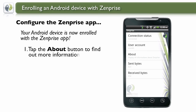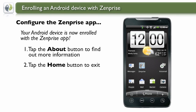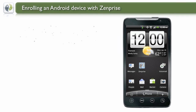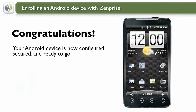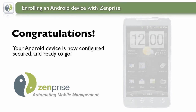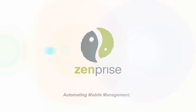If you'd like, you can tap the About button to find more information about the ZenPrize app running on your Android device. When finished, tap the Home button to exit. And that's it! Congratulations! You've now just enrolled your Android device and configured it securely with ZenPrize. ZenPrize — Automating Mobile Management.